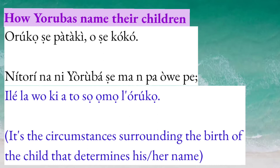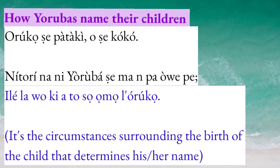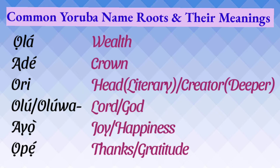Like I said, names are very important. Oruko oshi kwa taki, oruko oshi koko. That's why the Yorubas have a proverb that says it is the circumstances that surround the birth of a child, or the family from which the child comes from, that determines the name that a child gets at birth. So that is to say, Yoruba people are very intentional about the names that they give their children.